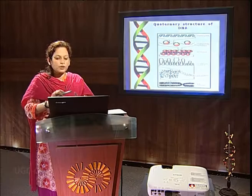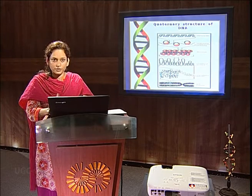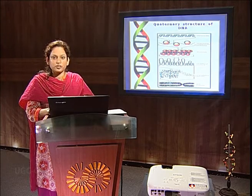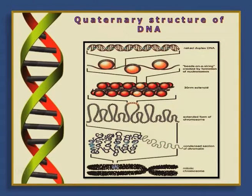Let us now see the quaternary structure. The quaternary structure of DNA represents another higher level of organization of the DNA molecule. This represents the interaction taking place between DNA and protein during the formation of chromosomes — that is, how the nucleosome is folded to form a chromosome. This represents the quaternary structure of DNA.